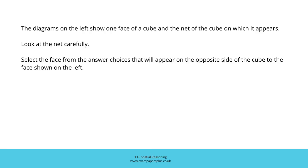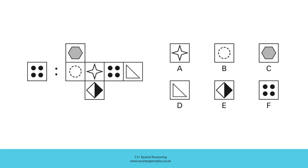Now you can try a second similar question. Remember, the diagrams on the left show one face of a cube and the net of the cube on which it appears. Look at the net carefully. Select the face from the answer choices that will appear on the opposite side of the cube to the face shown on the left. Consider this net, try to visualise folding it to create a cube, and work out which of the faces would be opposite this one. The correct answer is one of these six answer options. Pause the video and try to work out the right answer within 30 seconds, then resume and we'll check the answer together.